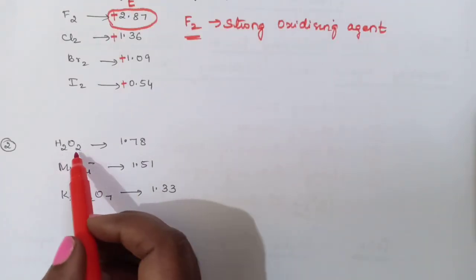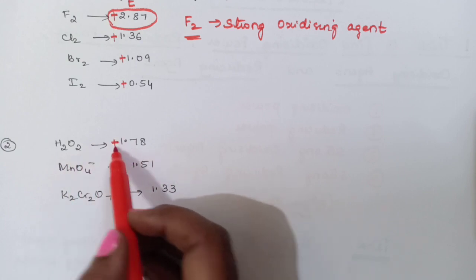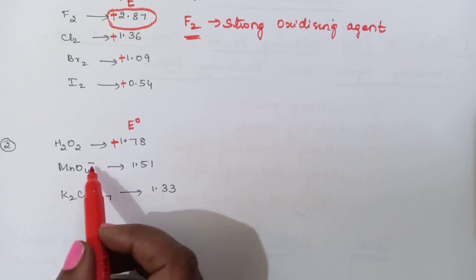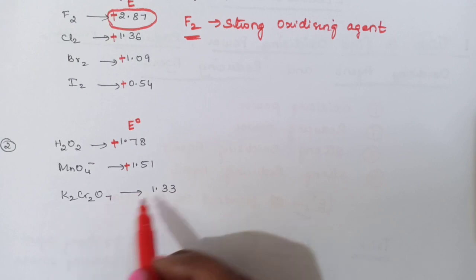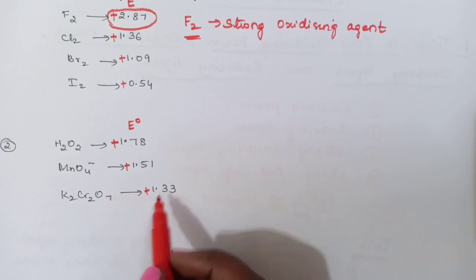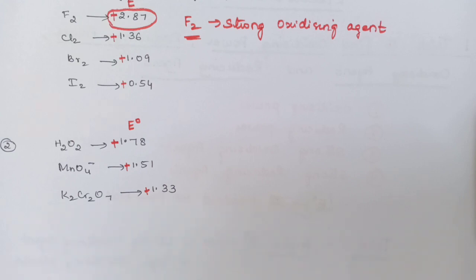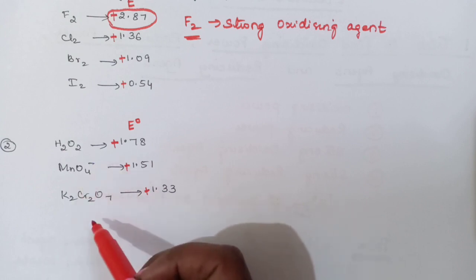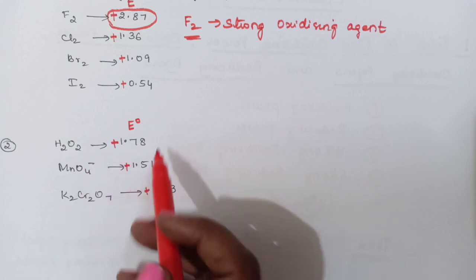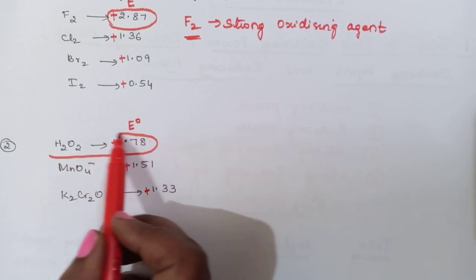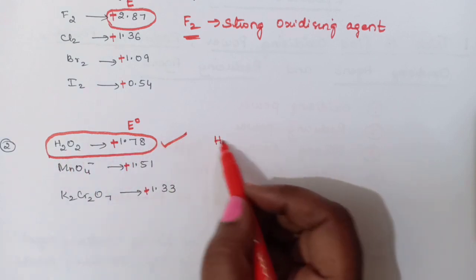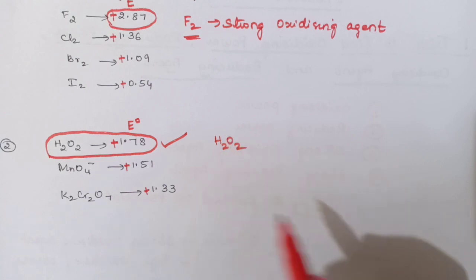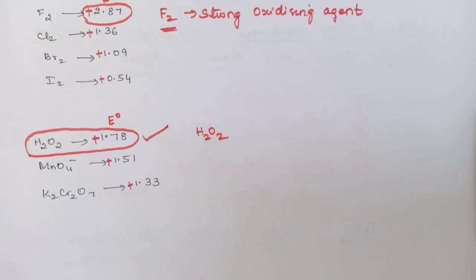Second question: hydrogen peroxide H2O2 has E0 value of +1.78, MnO4⁻ has E0 value of +1.51, and potassium dichromate K2Cr2O7 has a value of +1.33. You have to find which is the strong oxidizing agent. Here, the strong oxidizing agent will be H2O2, because its E0 value is higher — plus 1.78. Therefore H2O2 will be the strong oxidizing agent.